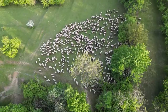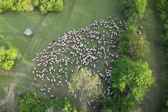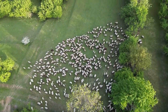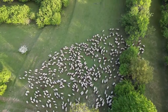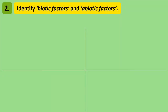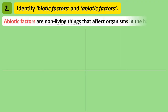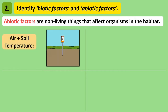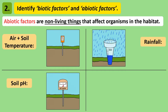Take note that even if you studied a different habitat, the methods we use in this video are easily transferable to your habitat. After choosing your habitat and drawing a sketch map of it, the first part of the study is to investigate what factors affect living things in the habitat. These factors are either abiotic or biotic factors. Abiotic factors are non-living things that affect organisms in the habitat, such as soil and air temperature, soil pH, rainfall and light intensity.